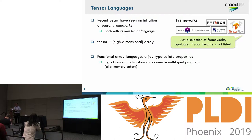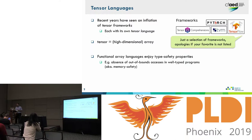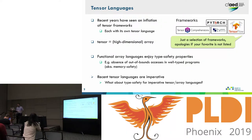One of the things that this community has a lot of experience with is array languages, which we should nowadays call tensor languages. There's a class of functional array languages that have been studied in part by this community. Like functional languages in general, they enjoy certain type safety properties that have been formally developed. What I mean by type safety in this context is that a well-typed program should not have out-of-bounds accesses. You can ensure that in different ways — with dynamic checks everywhere — but what we're after here is some kind of static type safety or static memory safety.